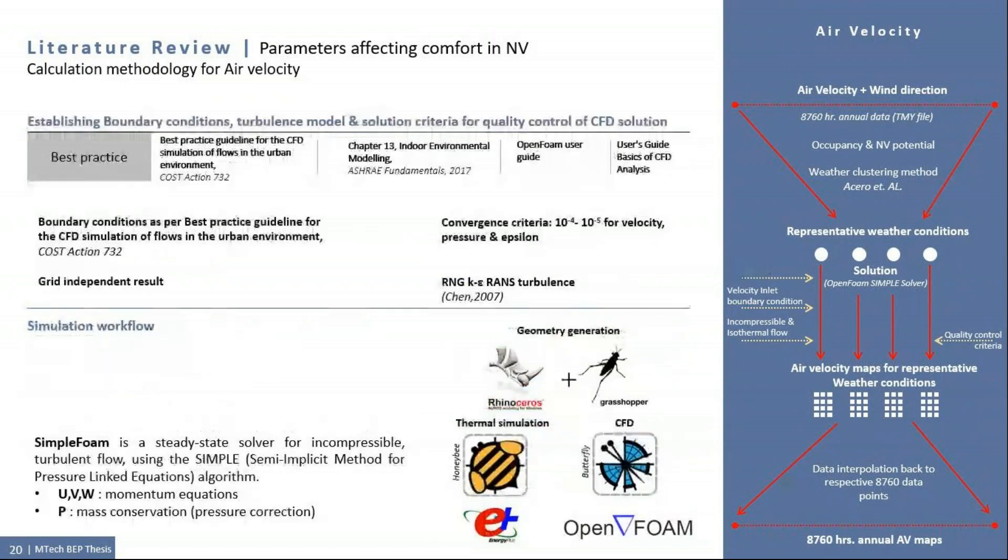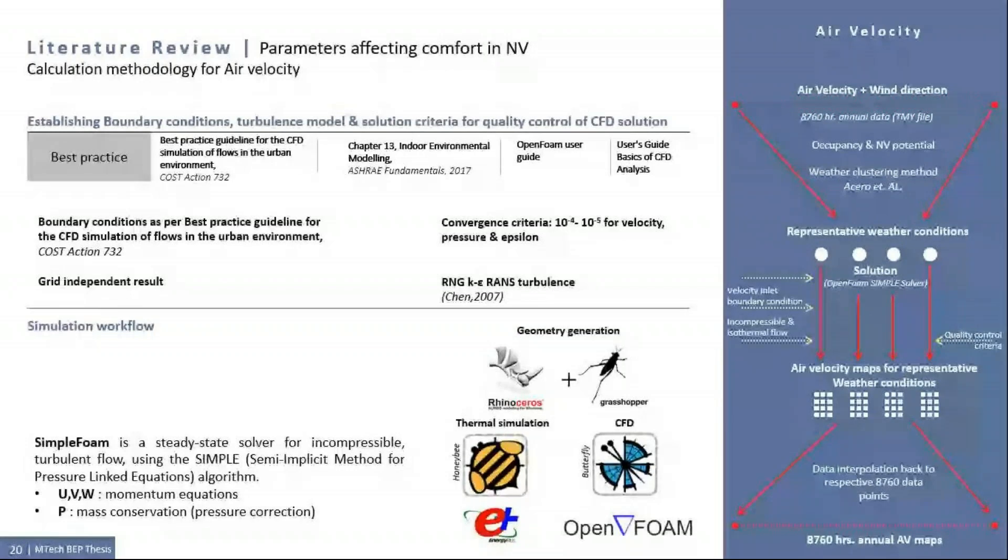The RNG K-epsilon model will be used as it has the best overall performance compared to other models in terms of accuracy, computing efficiency and robustness. Quality control criteria like grid independence and convergence have been understood from the literature and boundary conditions will be defined as per best practices that will be discussed. Rhinoceros along with Grasshopper will be used as it includes many open source libraries like Ladybug, which are environmental plugins for Grasshopper and will be helpful in creating systems. Honeybee has the ability to connect with validated simulation engines such as EnergyPlus via OpenStudio for thermal simulations and Butterfly, which is a plugin and a Python library to create and run advanced CFD simulations using OpenFOAM.